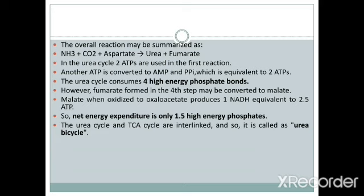However, fumarate formed in the fourth step is converted to malate, and when malate is oxidized to oxaloacetate it produces one NADH, equivalent to 2.5 ATP. So the urea cycle consumes four high-energy phosphate bonds and produces 2.5 ATP, meaning the net energy expenditure is only about 1.5 high-energy phosphate bonds.